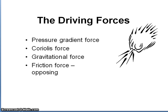Wind has three driving forces and one oppositional force. Pressure gradient is the difference between high and low pressure systems, and that causes movement of air. The Coriolis effect causes the deflection or turning of air, setting up those circular cyclonic motions. Gravitational force relates to cold air masses, which tend to seek lower elevation. And friction is the slowing down of wind due to elements on the Earth's surface — trees, buildings, mountains, whatever.